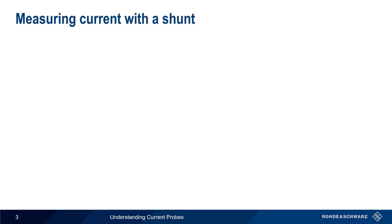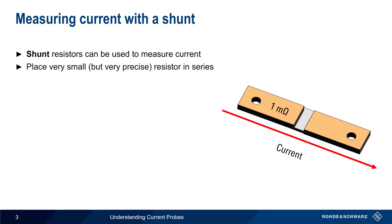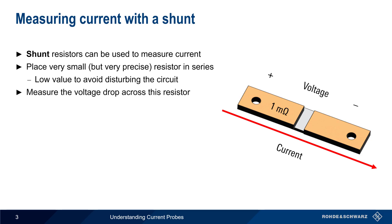One way to convert a current measurement into a voltage is using a so-called shunt or sense resistor. This is a very small, but also very precise resistor that's placed in series with a circuit. In order to avoid disturbing the circuit, these resistors typically have a very low value, from less than an ohm down to the milliohm range. The voltage drop across this resistor is measured, and using the known value of the resistor, Ohm's law can then be used to calculate the current passing through it.